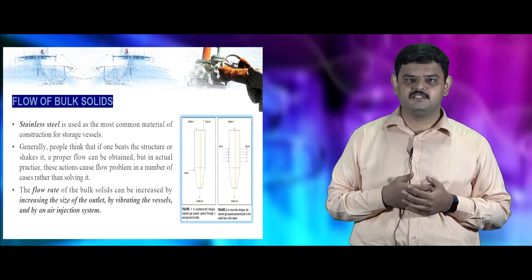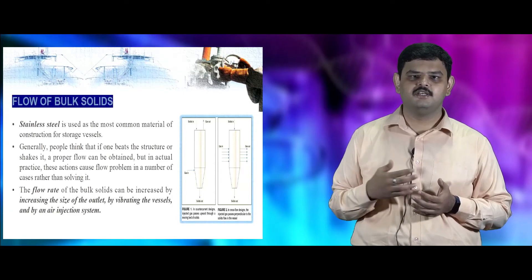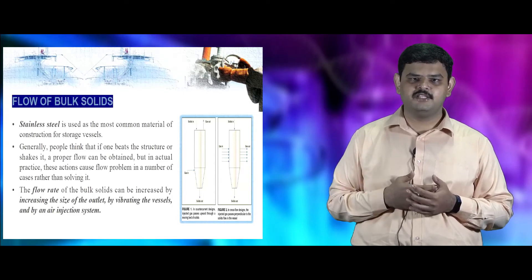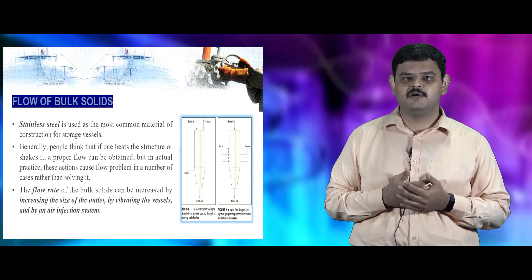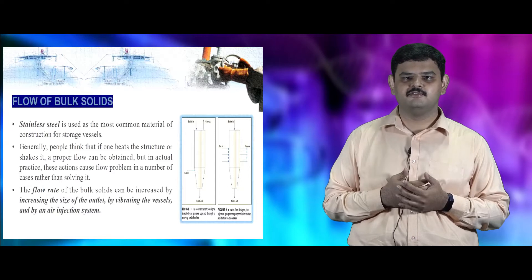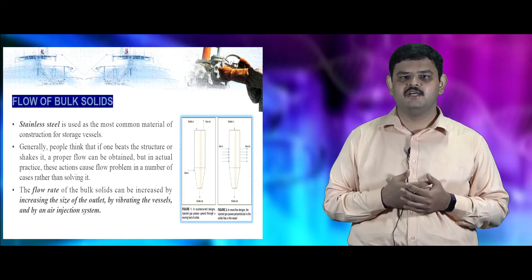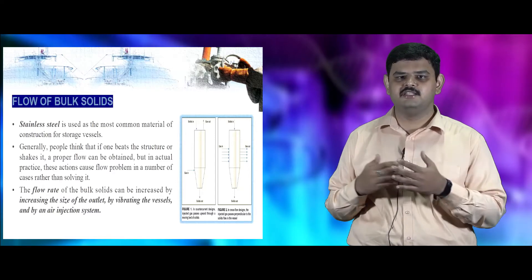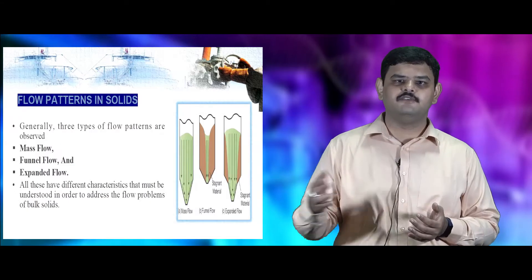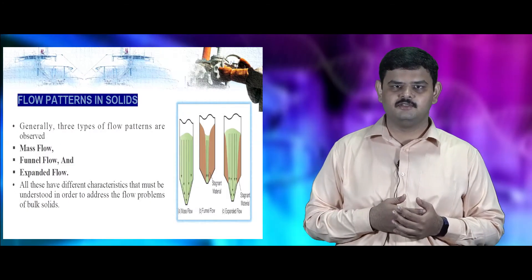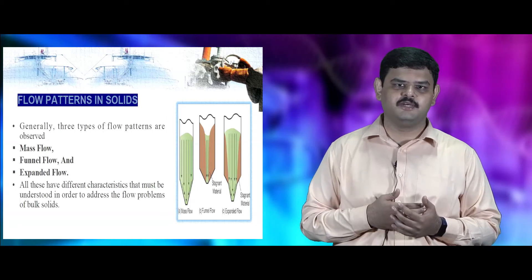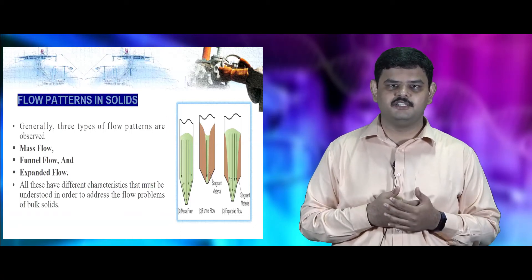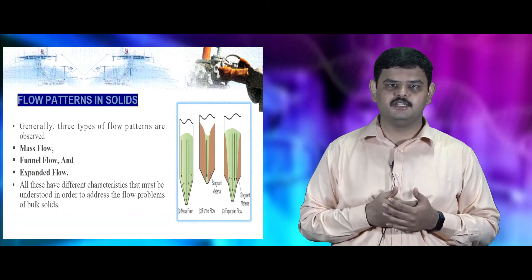Stainless steel is the common material of construction for silos. People may think that beating the silos will improve flow, but it leads to numerous problems. To overcome these problems, an air injection system and vibrating the silos are used. There are three flow patterns observed in bins and silos: mass flow, funnel flow, and expanded flow. These must be understood to know the different flow types.